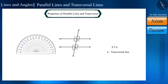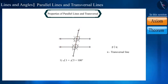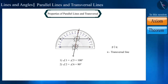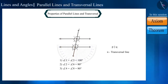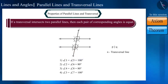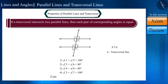With the help of a protractor, let's measure the pair of corresponding angles. Here you can see that angle 1 is equal to angle 5, angle 2 is equal to angle 6, angle 4 is equal to angle 8, and angle 3 is equal to angle 7. We can see that if a transversal intersects two parallel lines, then each pair of corresponding angles are equal. This is what we call the corresponding angles axiom.